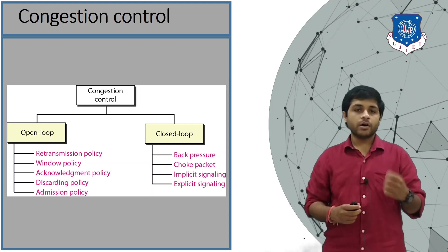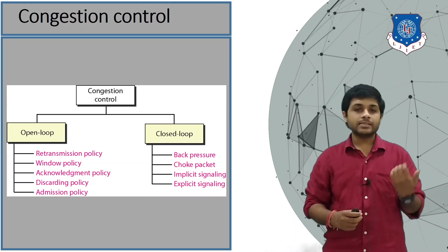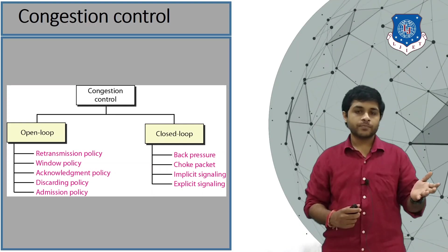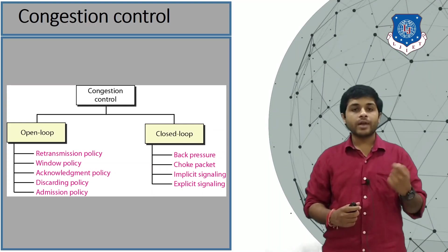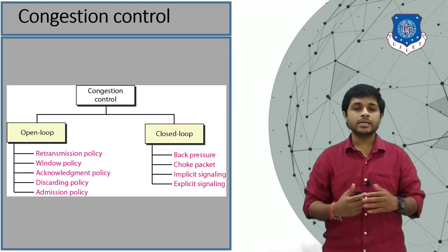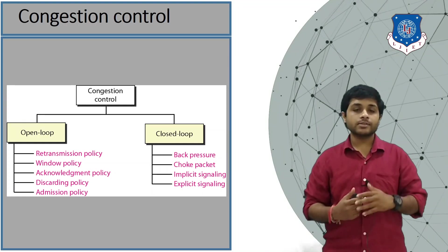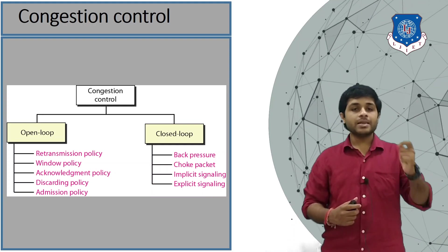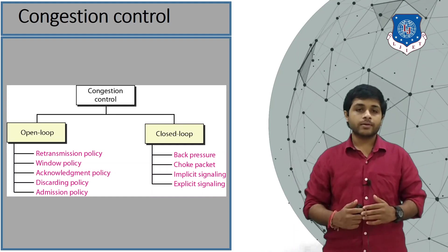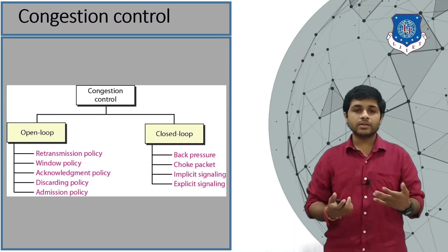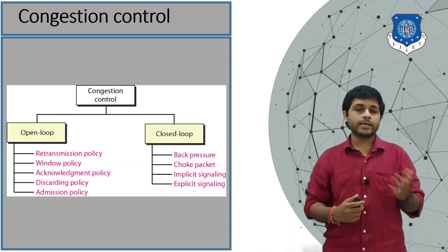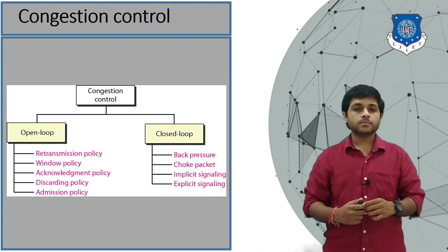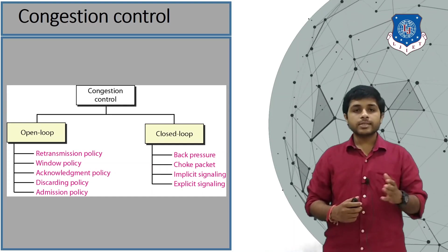The next type is the acknowledgement policy. Acknowledgement can be of two types: the sender can receive an acknowledgement for every packet sent, or it can receive one acknowledgement for every five or ten packets. If acknowledgement is sent for every packet, there will be many packets traveling back and forth in the link. If acknowledgement is sent per five packets, there will be fewer packets in the link. The latter is called cumulative acknowledgement.